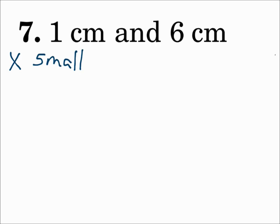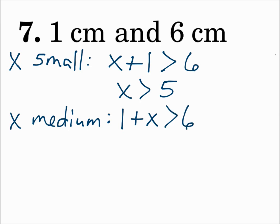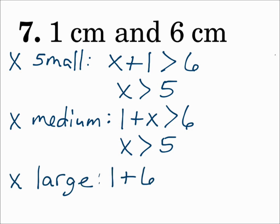If the third side x is the smallest, then x plus 1 has to be greater than 6. Subtracting 1 from each side, x has to be greater than 5. If x is the middle side, then 1 plus x has to be greater than 6, giving the same result. If x is the largest side, then 1 plus 6 has to be greater than x, which means 7 is greater than x, or x is less than 7.